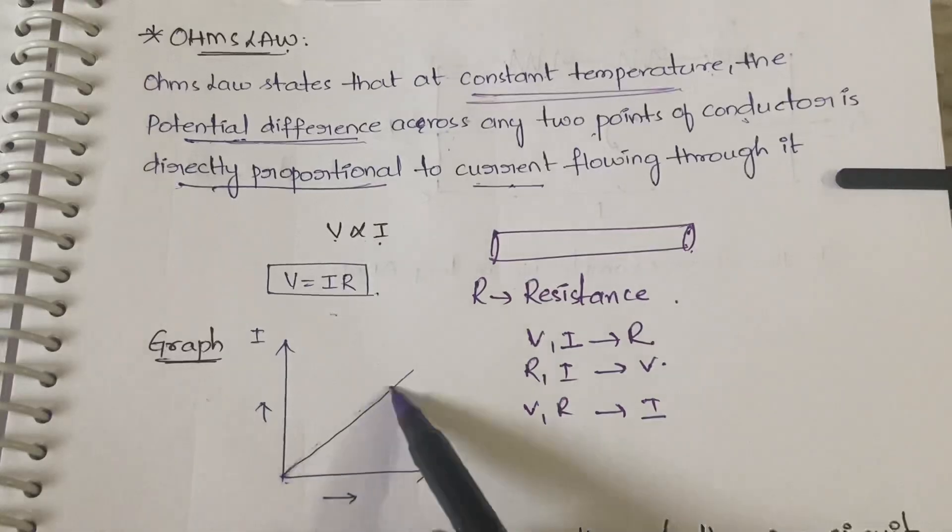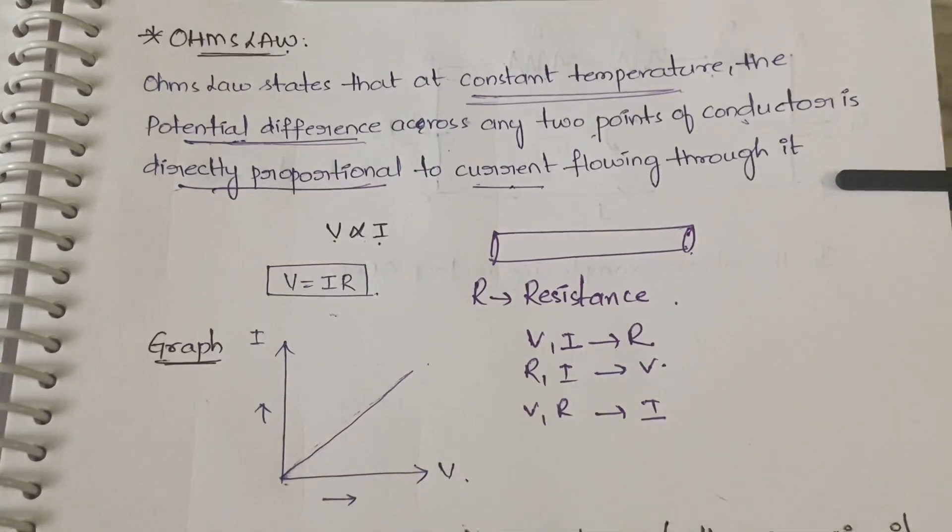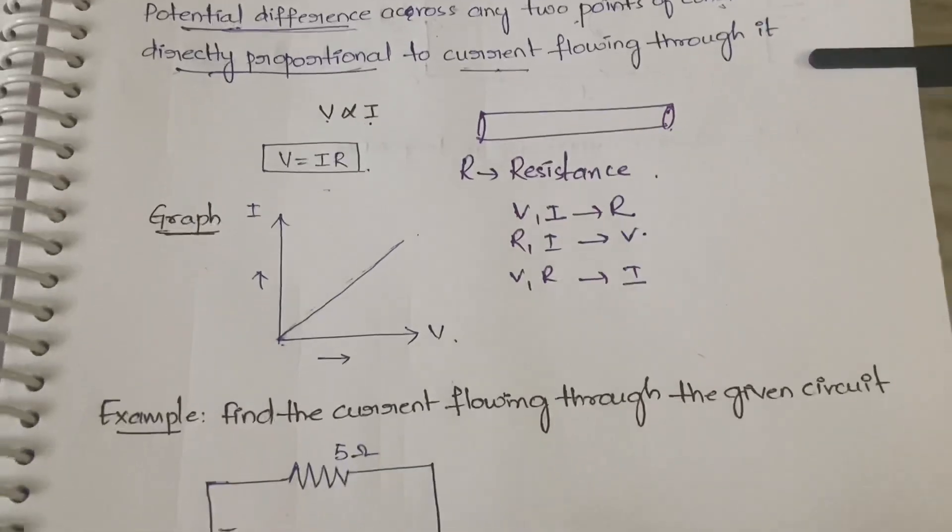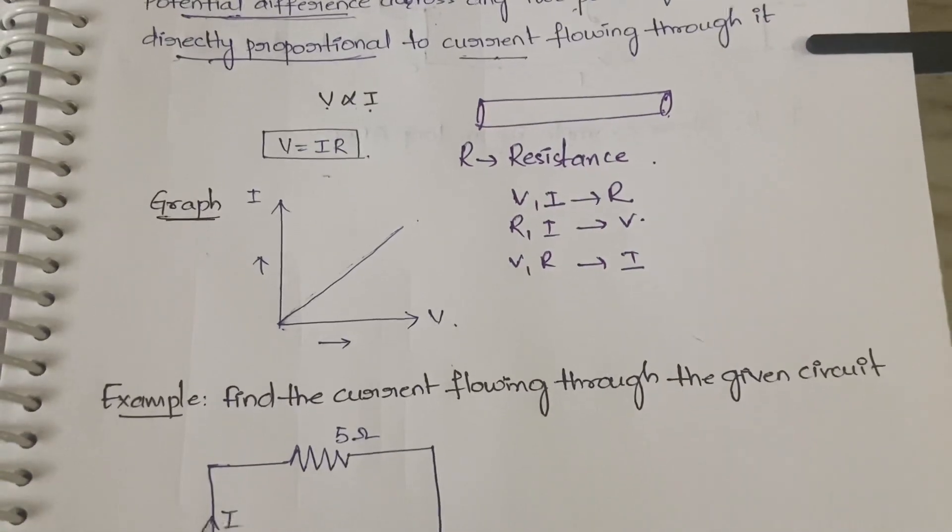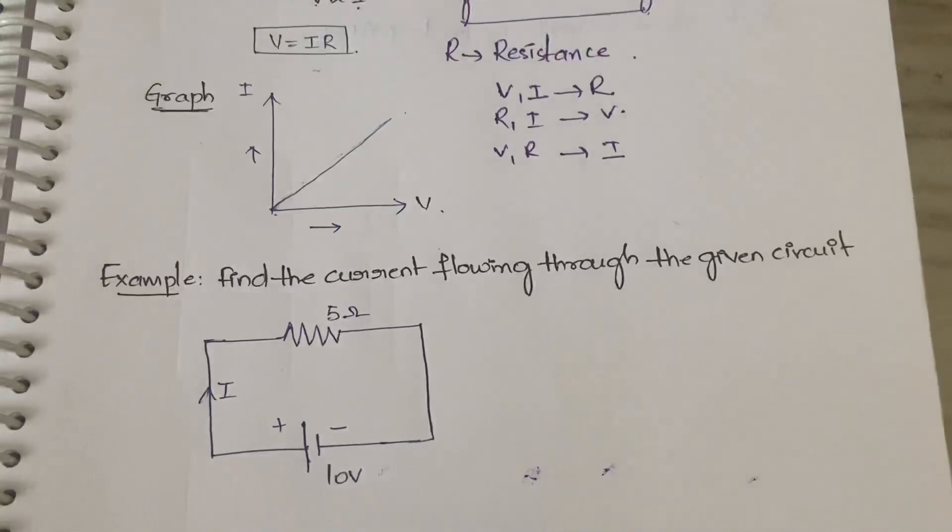So if V is increasing, I also will increase, so that is why the graph is like this. This is the graph between V and I, and this works only at constant temperature. Next, example problem: find the current flowing through the given circuit.